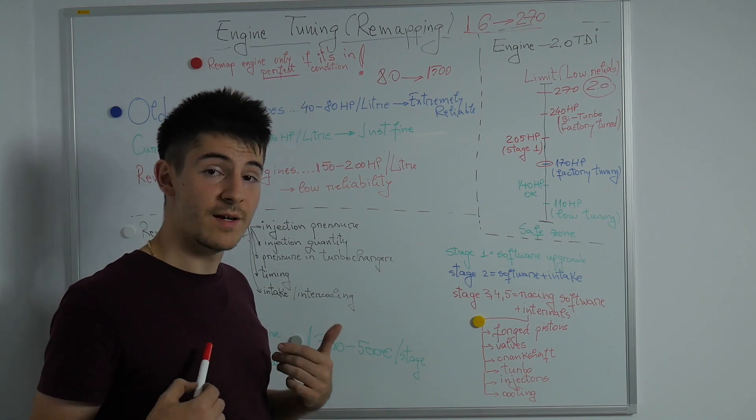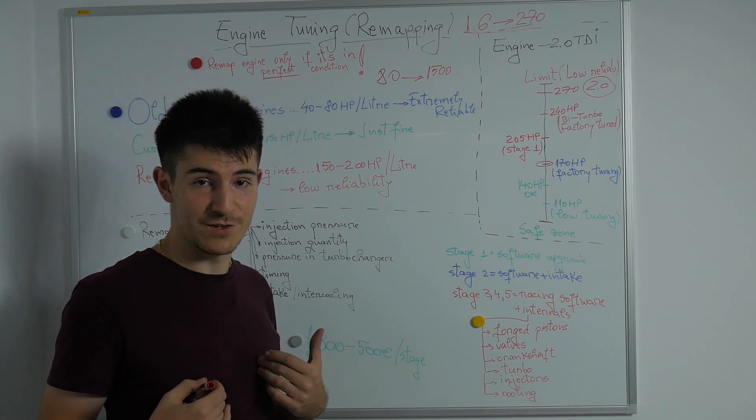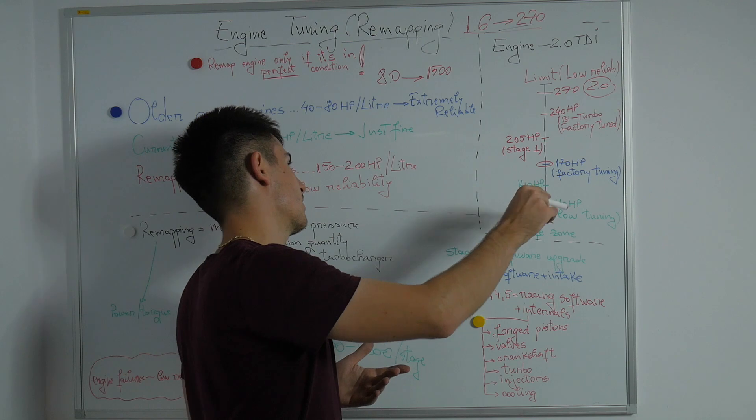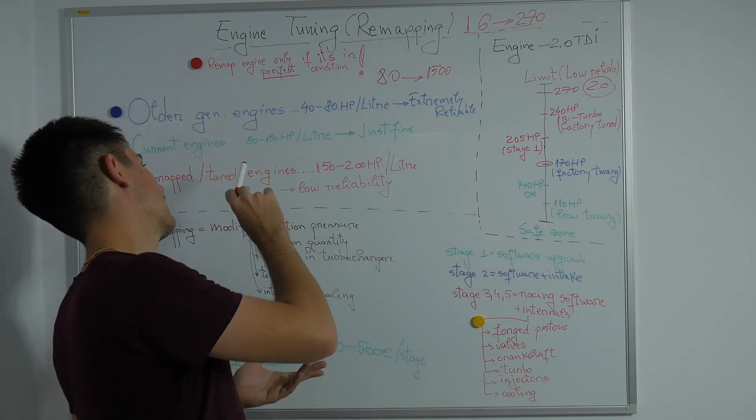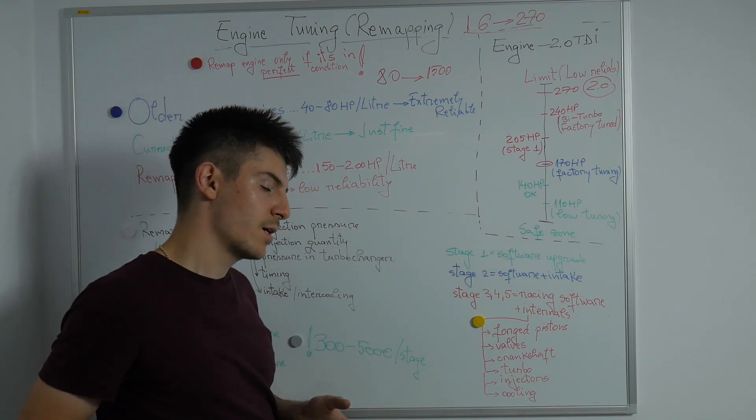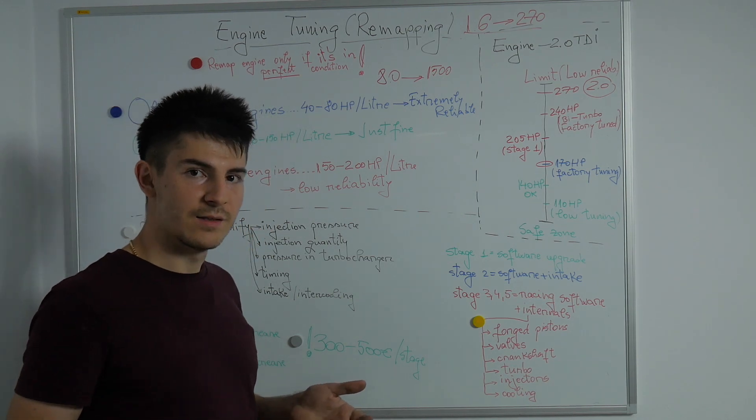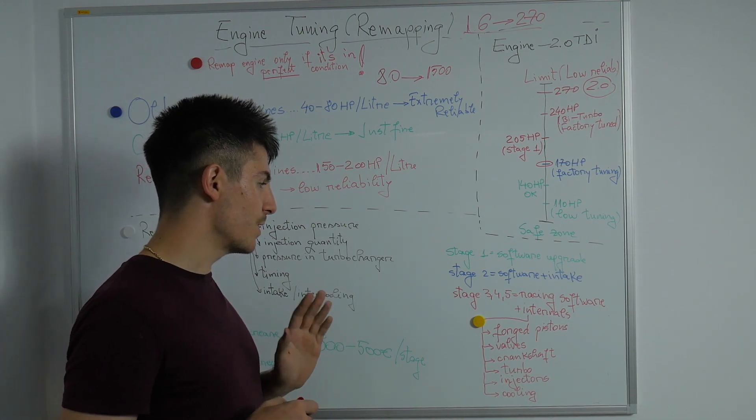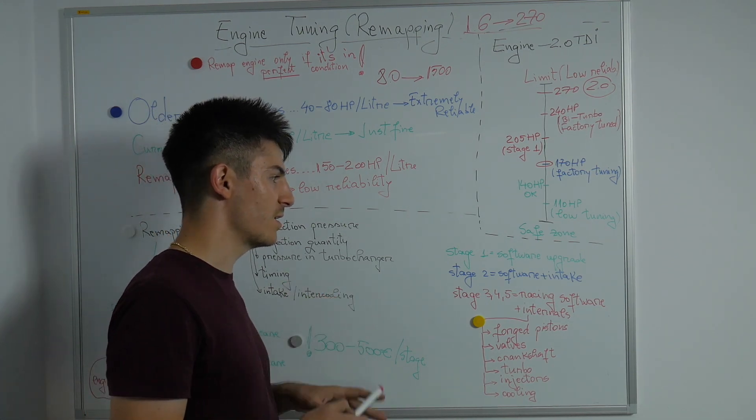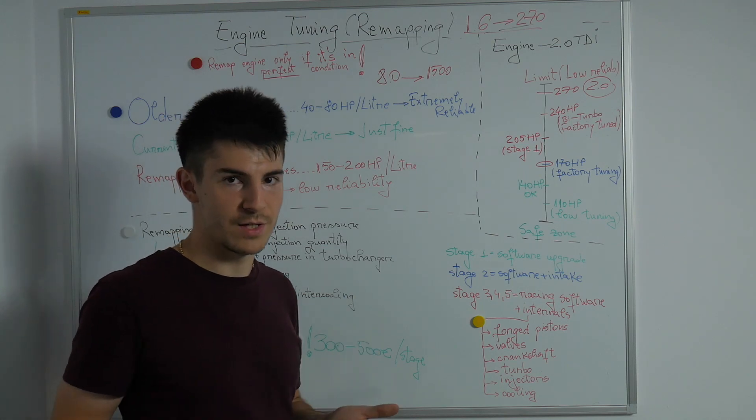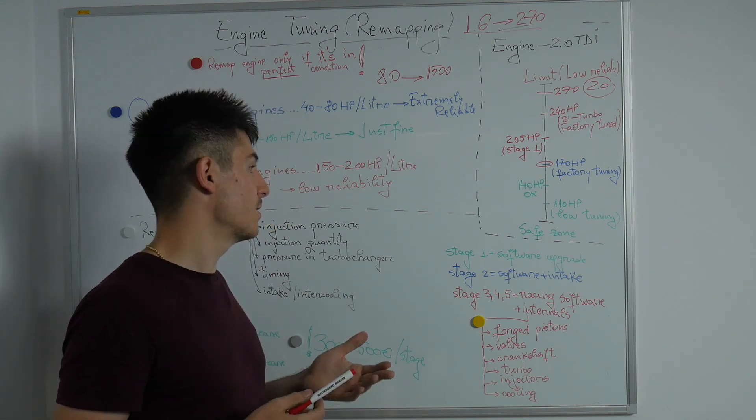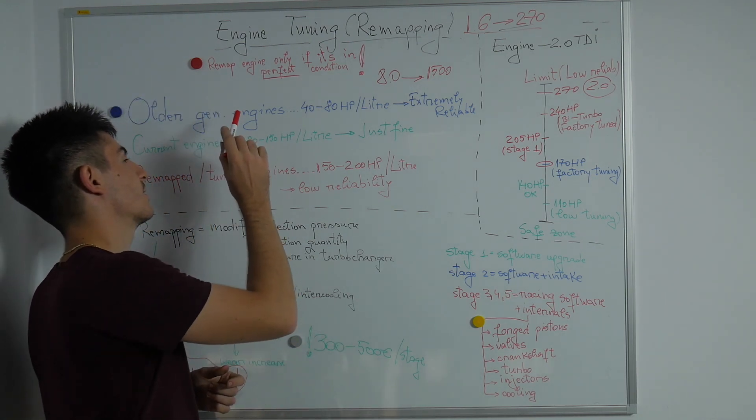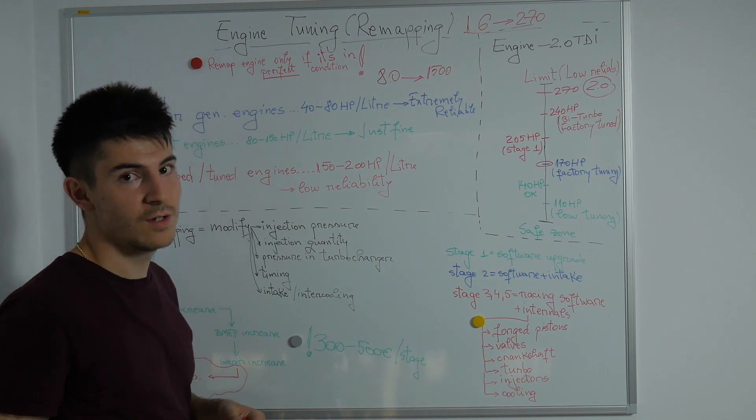Another question is, would I ever remap my engine for my future cars? Well, if I would buy a car which would be in the safe zone of around 80 to 150 horsepower per liter, I would probably add a stage 1. Probably, I don't know exactly. I wouldn't go beyond stage 1. Stage 1 is meant to be a safe upgrade and you could add this remap, this modification to your car if, only if, it's in perfect condition.